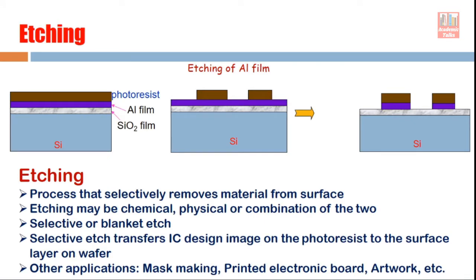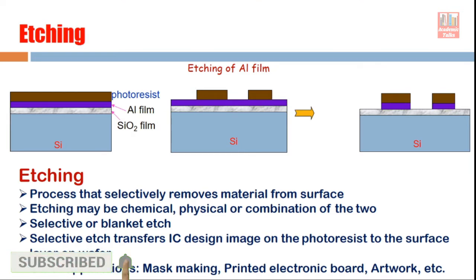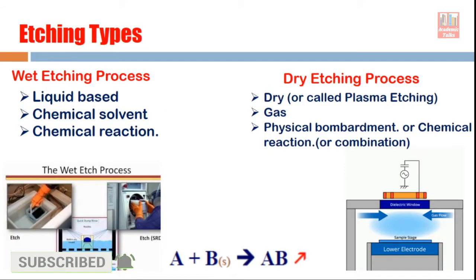This is a brief review of what we studied in the last lecture. Etching is the selective removal of material from the surface. There are two kinds of etching: wet etching, which is chemical and liquid-based, and dry etching, which uses a gas — a plasma — to achieve the etching.